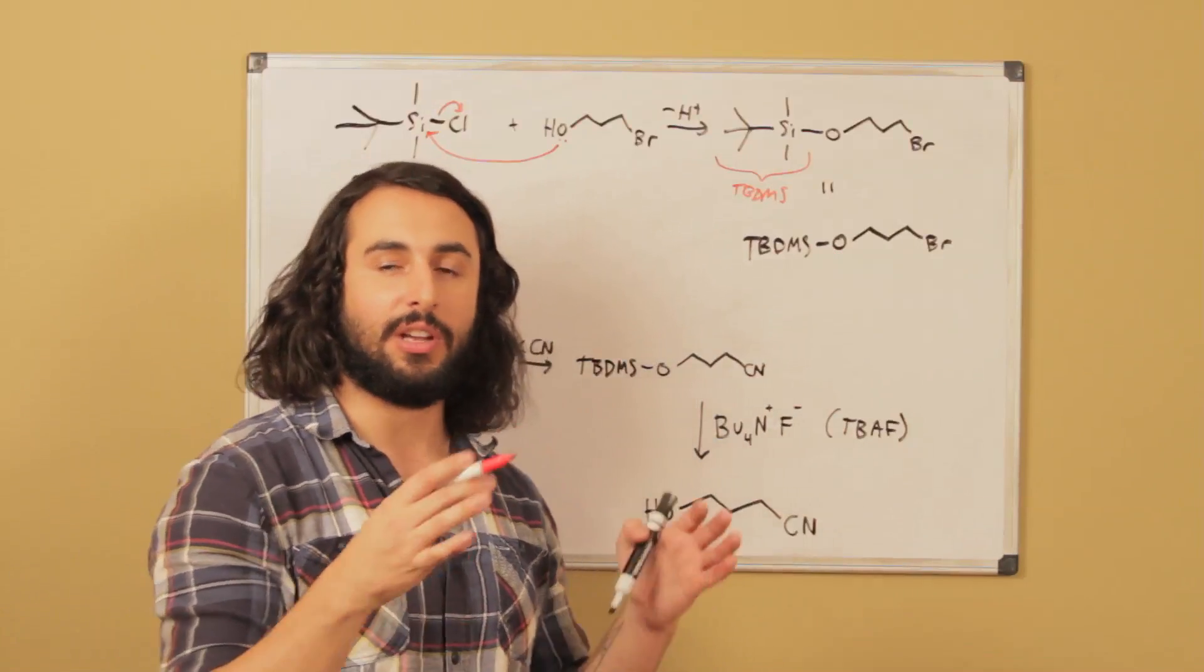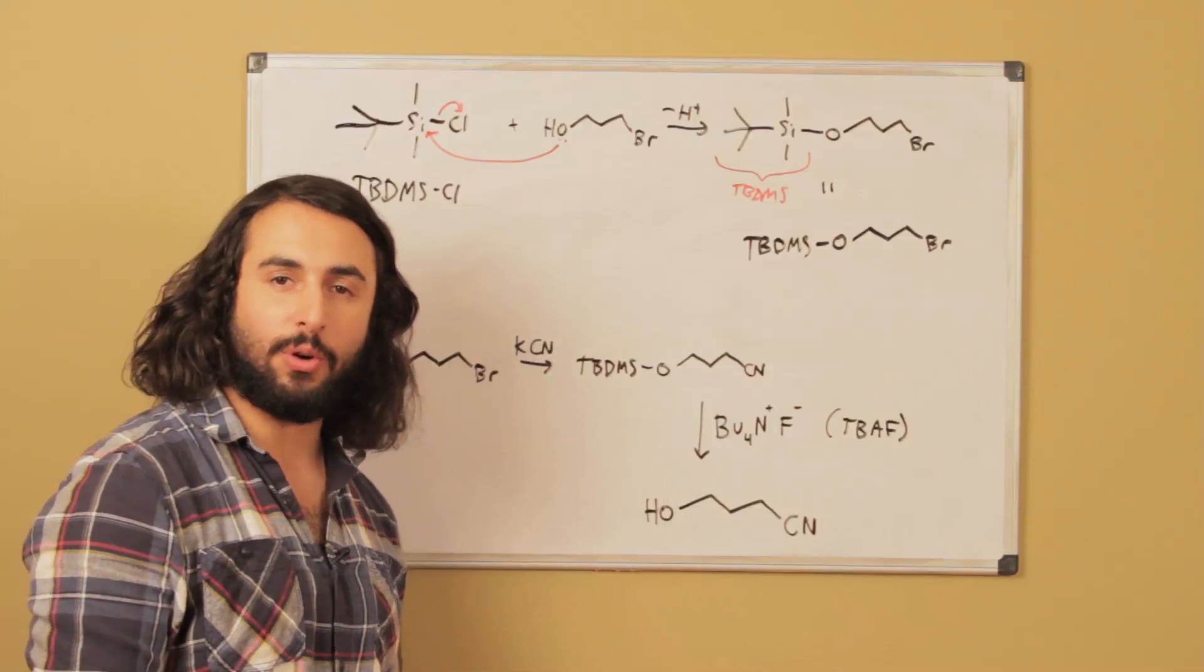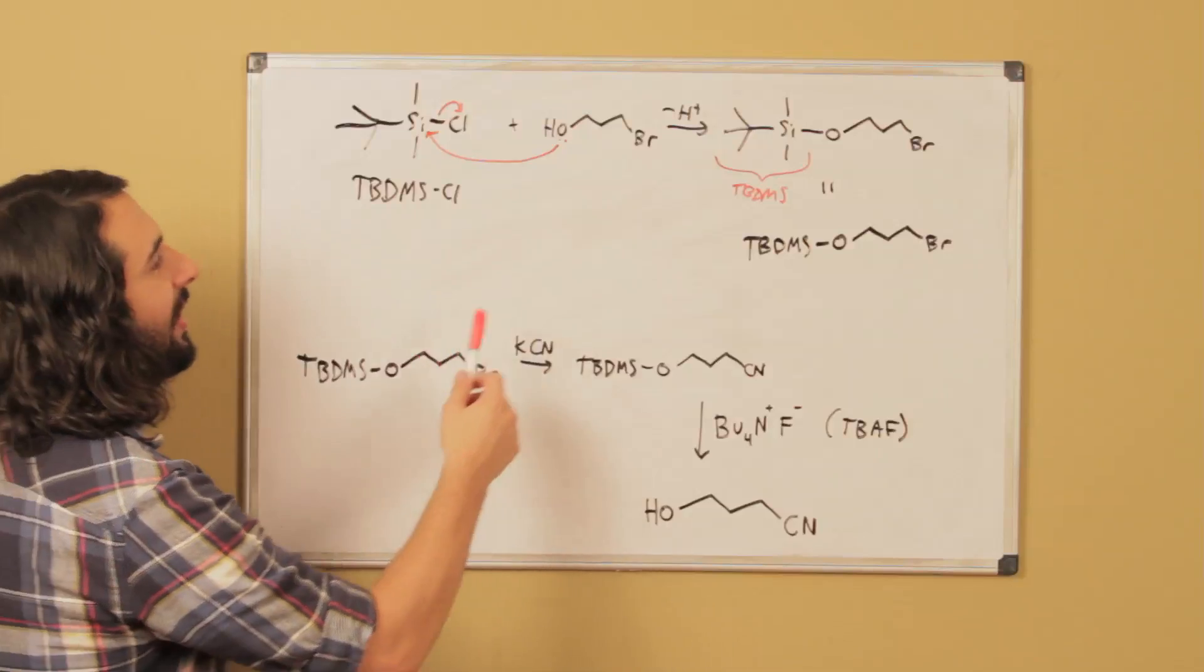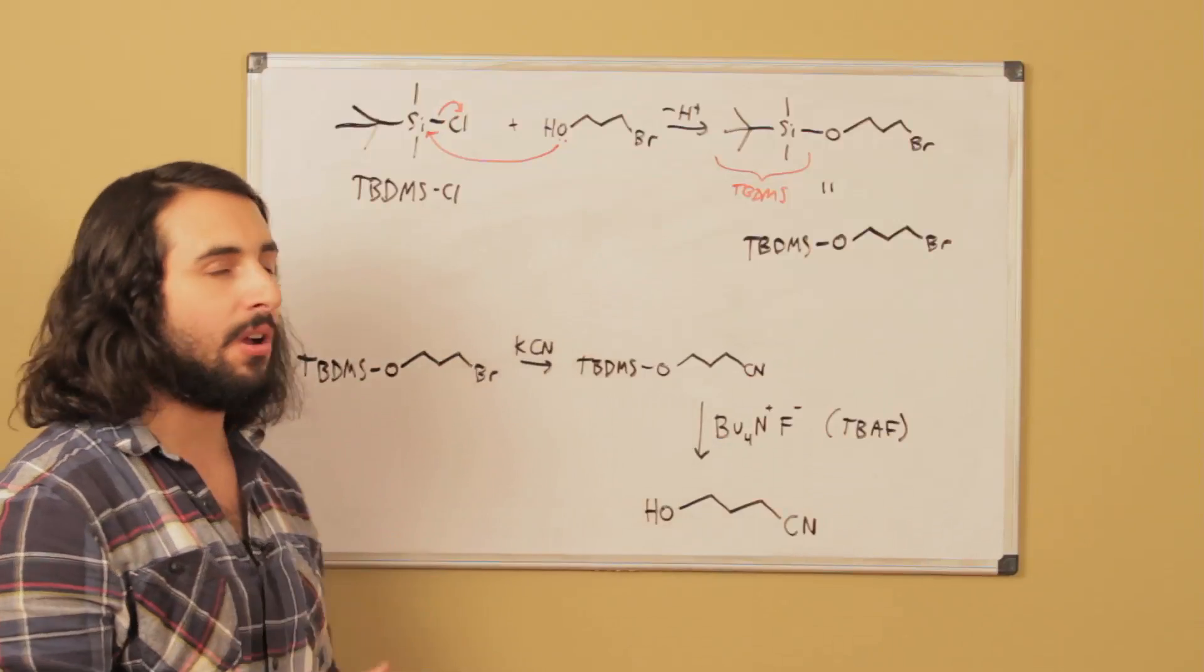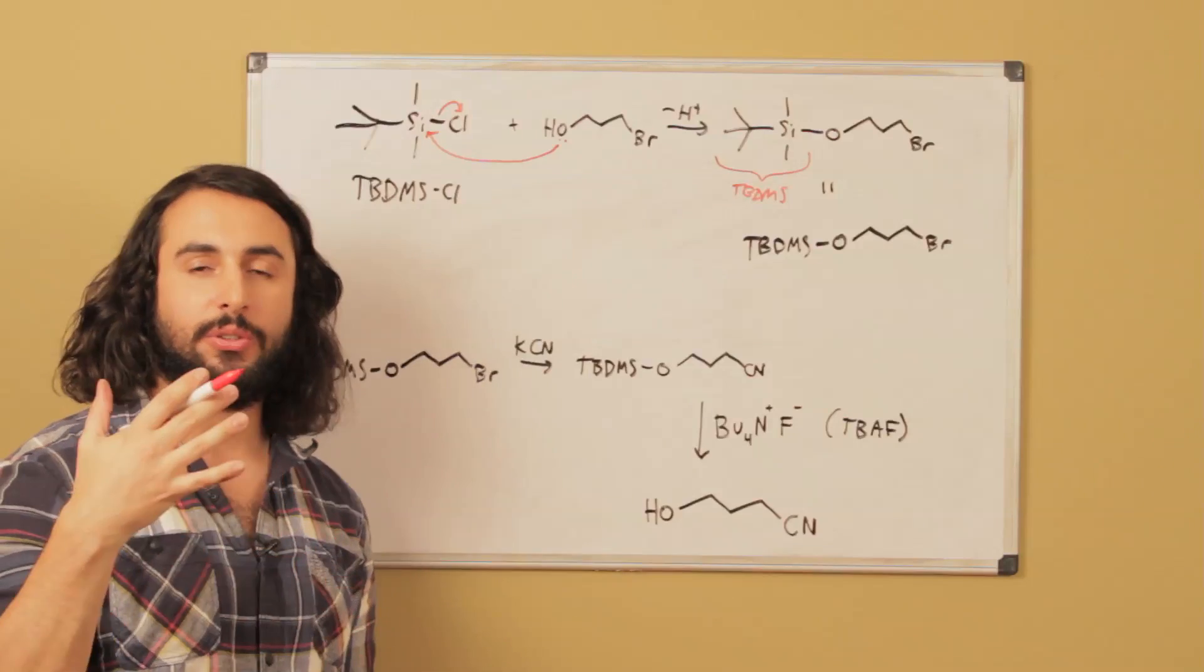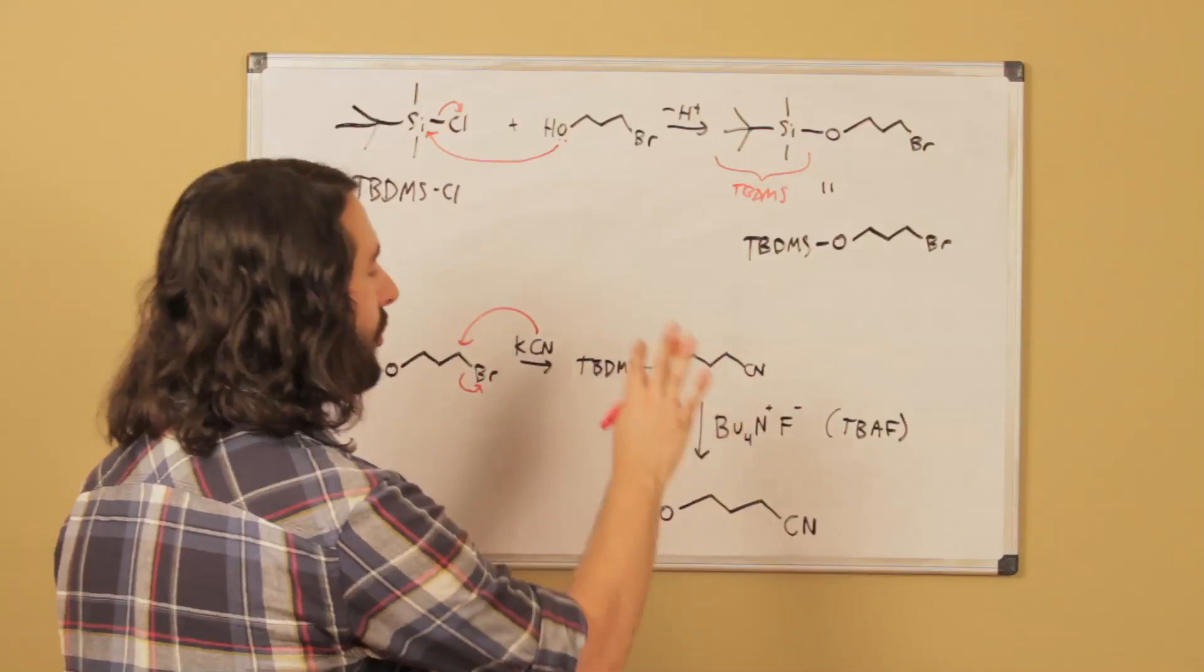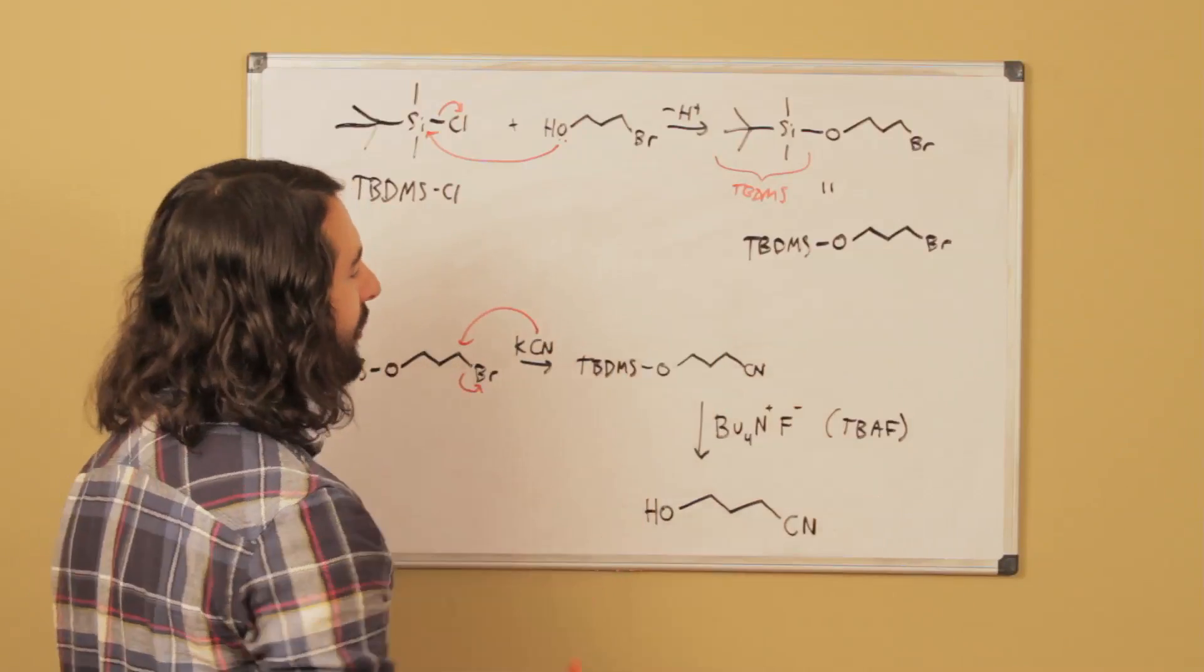Here's what's interesting about putting this protecting group on the hydroxyl. Before, we were worried about an acid-base reaction with that hydroxyl proton. But now there is no longer a hydroxyl proton - this oxygen is bound to silicon, not hydrogen. There's no longer a proton acidic enough to react with whatever base or nucleophile we're using. Now let's do an SN2 reaction with KCN. The SN2 reaction is complete without any interference from the hydroxyl group.